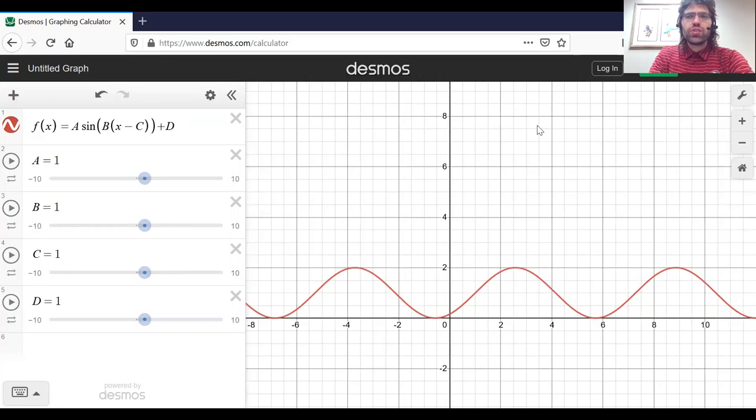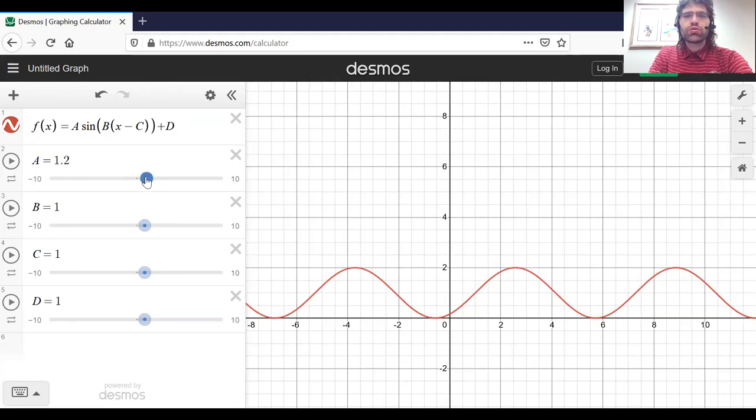Sinusoidal functions graphically look like waves. And the constants that appear in this equation, the A, the B, the C, and the D, these all control the shape of the wave.